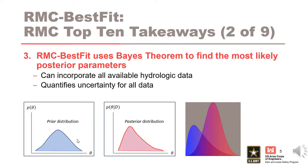Number three is that RMC Best Fit uses Bayes' theorem to find the most likely posterior parameters. RMC Best Fit is fully capable of incorporating all of the available hydrologic data, and RMC Best Fit quantifies uncertainty for all of the data entered.